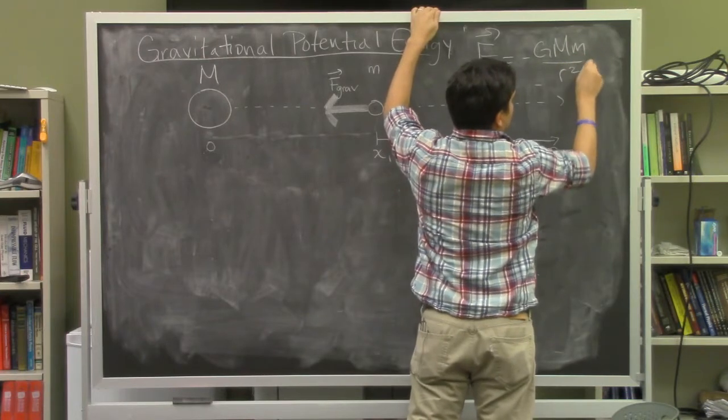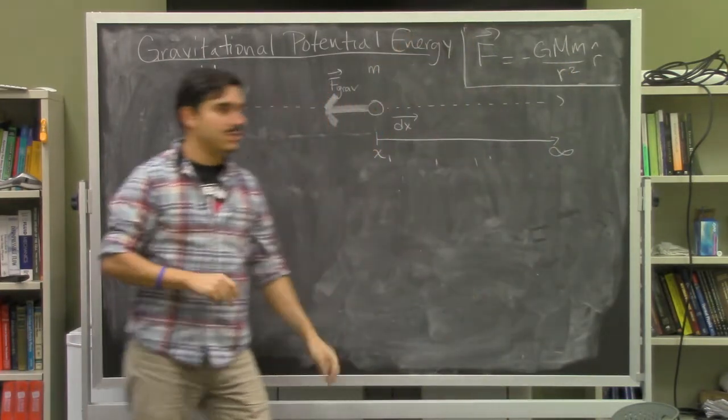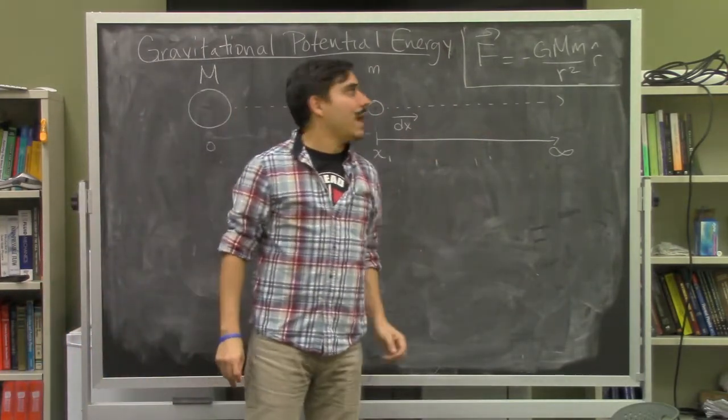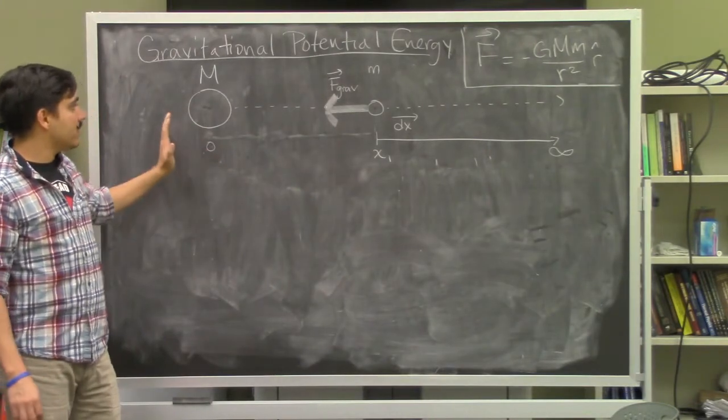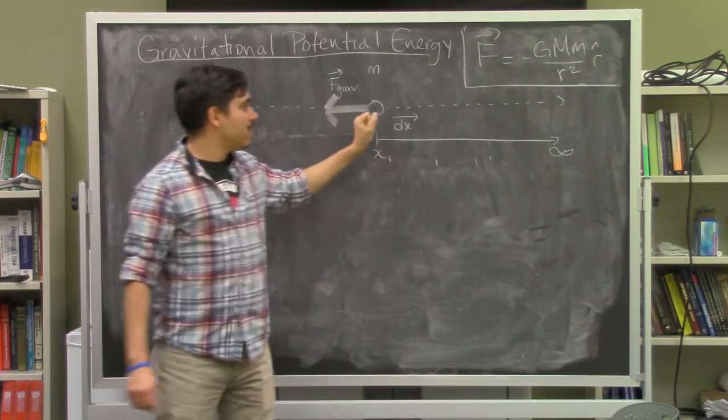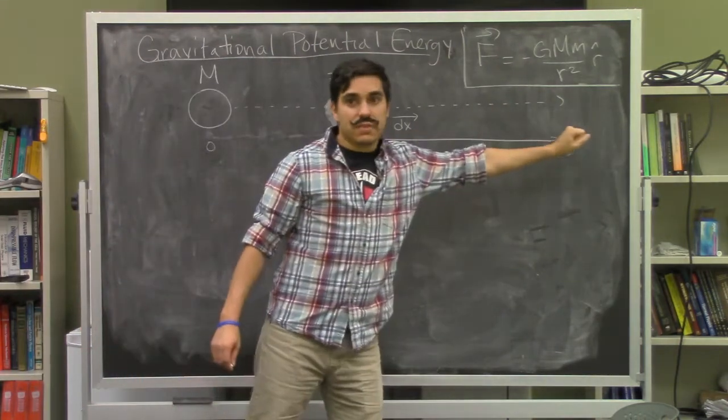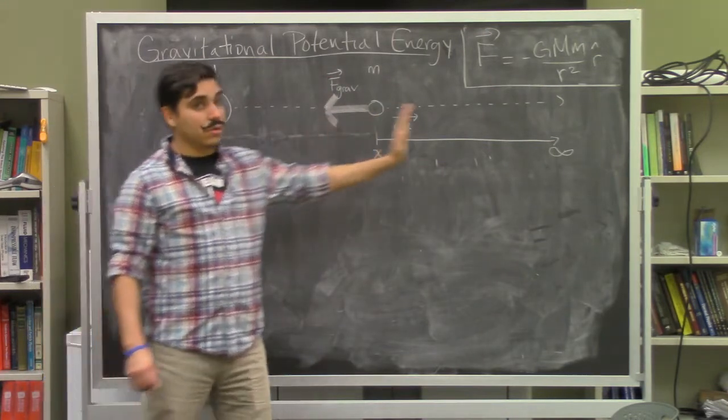This is the full description of the gravitational force: F = -GMm/r² r̂. To simplify, we're going to consider a situation where we have a large mass and a small mass that we take from location x₁ out to infinity, and we calculate the work done by the gravitational force.